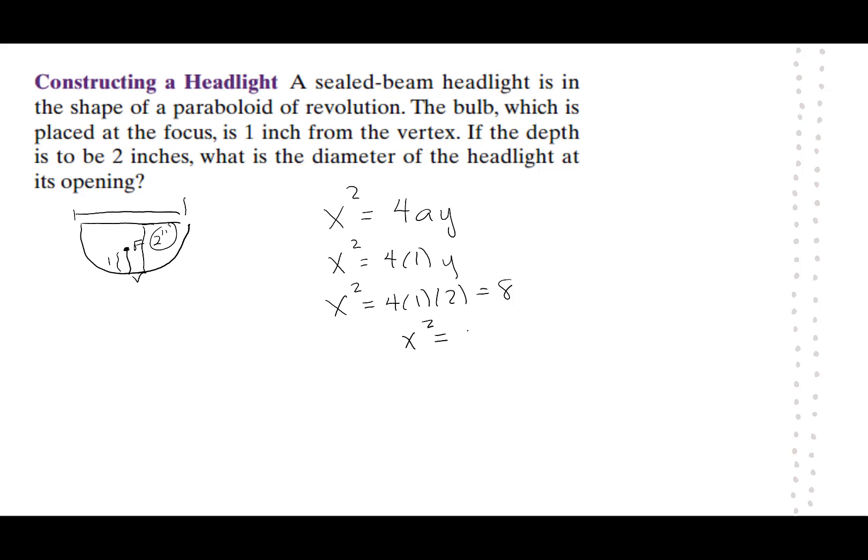That says x squared is equal to eight. You can take the square root. X is the square root of eight. That square root of eight would be this distance to here. It would also symmetrically be that distance to the left. So if I have square root of eight and square root of eight, our distance is two square root of eight.